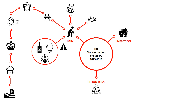Surgeons used very unhygienic methods. They didn't know that having clean clothes could save lives. Often they wore the same coats for years, which were covered in dried blood and pus from previous operations. Operations were often carried out in unhygienic conditions, including at the patient's house. Operating instruments also caused infections because they were usually unwashed. Anaesthetics had solved the problem of pain, but surgeons were still faced with a high death rate from operations due to infection.